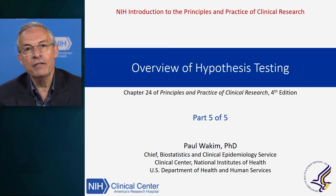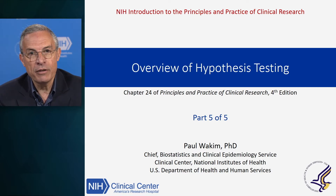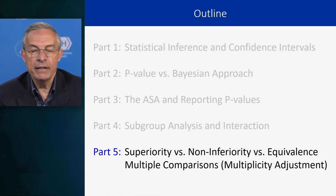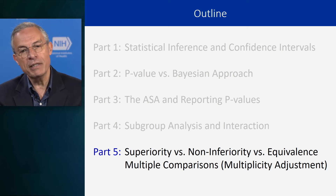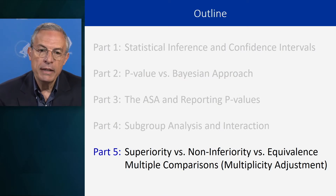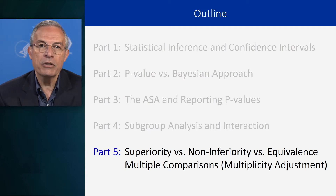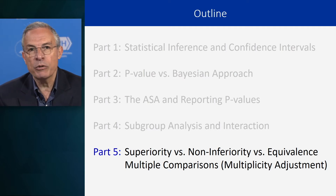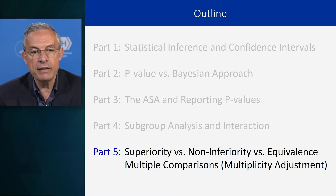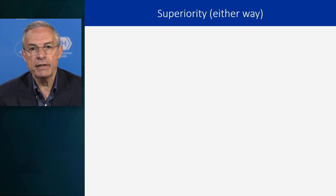Hello, I'm Paul Joachim. I'm Chief of Biostatistics and Clinical Epidemiology Service at the NIH Clinical Center, and this is the last part, part five of the module on hypothesis testing. In this segment, we're going to talk about two topics: the superiority, non-inferiority, and equivalence test, and multi-comparisons, also called multiplicity adjustment. Let's get started.